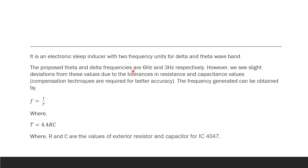The Artificial Sleep Inducer creates waves of two frequencies: theta and delta waves, with theoretically proposed frequencies of 6 Hz and 3 Hz respectively. However, there are slight deviations from these proposed values due to tolerances in the exterior resistance and exterior capacitor connected to the IC4047. The effective time period and corresponding frequency can be calculated using the standard relations.